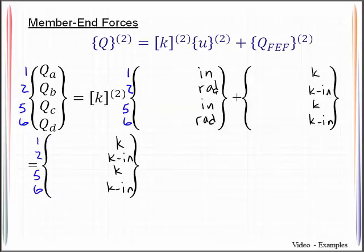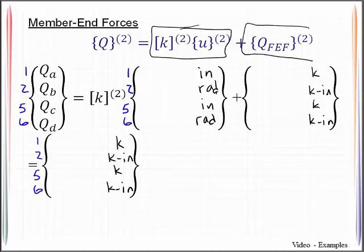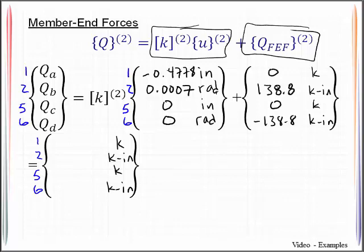But member number 2, we need to do the same type of matrix operation, but then we need to superimpose back what those fixed end forces were. So we've got negative 0.4778 inches, 0.0007 radians. And then we've got zeros here for degrees of freedom 5 and 6. But then we've got the fixed end forces that we had for member number 2. And when I perform those matrix operations, I will then get negative 6.16 kips, negative 286.0 kips, 6.16 kips, and negative 600.4 kip inches.